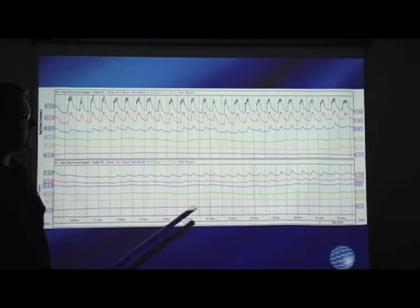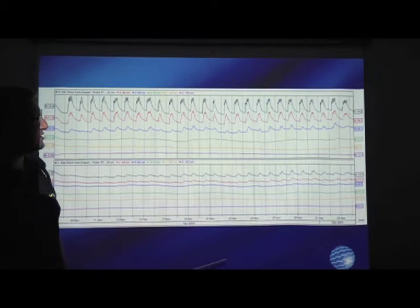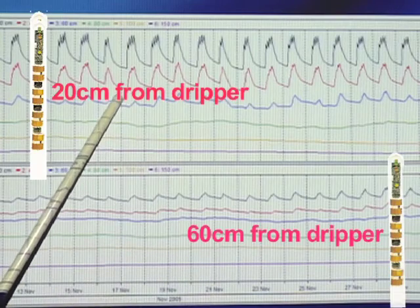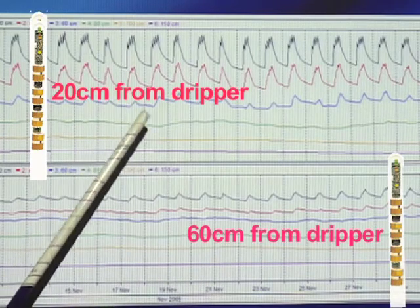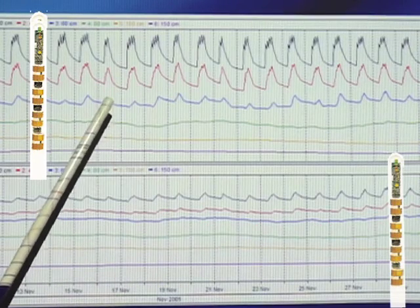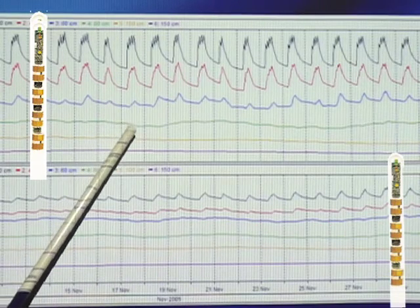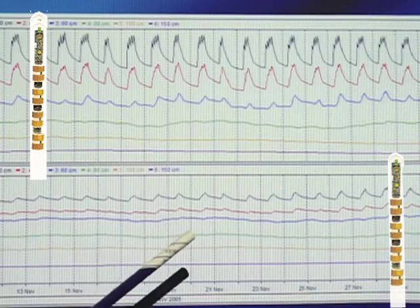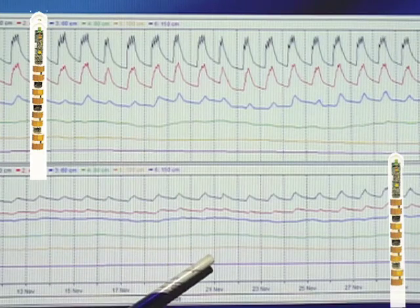We have here separate level graphs from our two EnviroScan probes. The top graph is 20 centimetres from the drip line, the bottom graph is 60 centimetres from the drip line. The sensors are at 20, 40, 60, 80, 100 and 150 centimetres and that's replicated on the second probe.